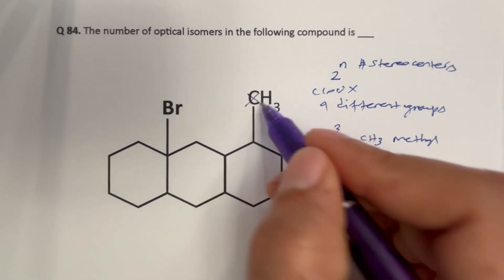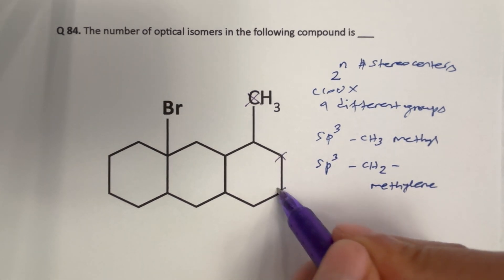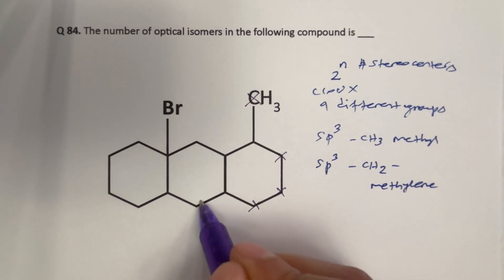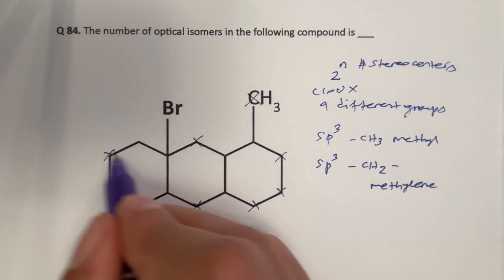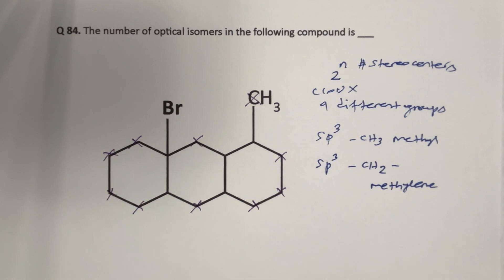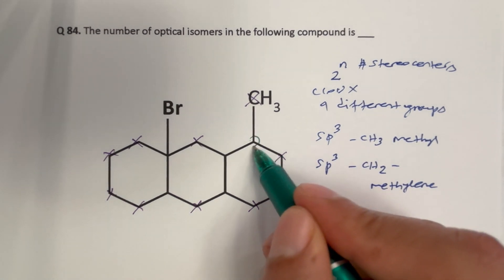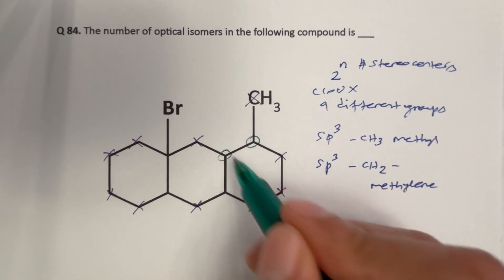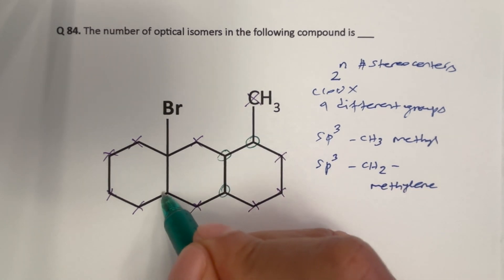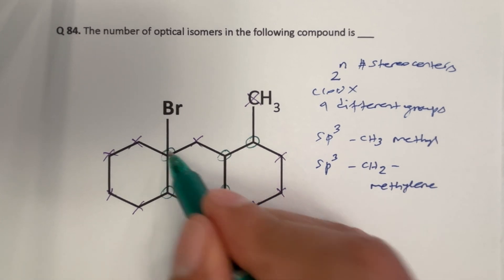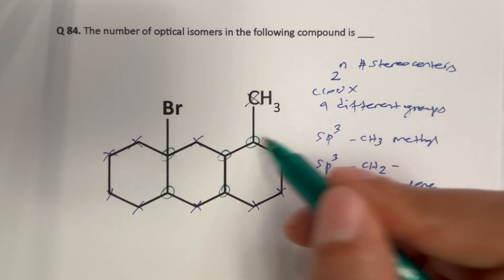So we eliminate the methyl group here, and then the CH2 groups here — CH2, CH2, CH2, CH2, CH2, CH2 — these are all CH2, so we eliminated all those. Now let us circle the carbons that are remaining: one, two, three, four, five. These could potentially be chiral centers. Let us check these one by one.